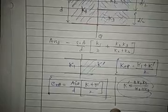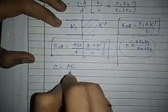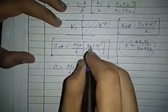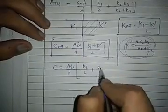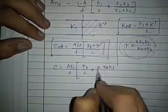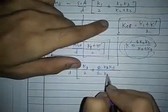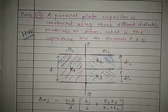Substituting K' into the expression: C = ε₀/D × [ K1/2 + K2·K3/(K2+K3) ]. So the final answer comes out as: C = (ε₀·A/D) × [ K1/2 + 2K2K3/(K2+K3) / 2 ]. That is the answer for this problem.